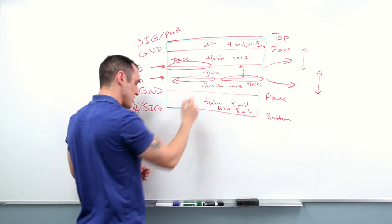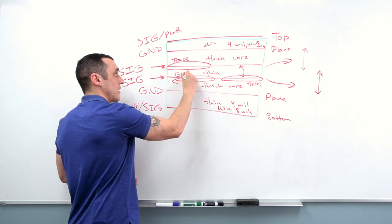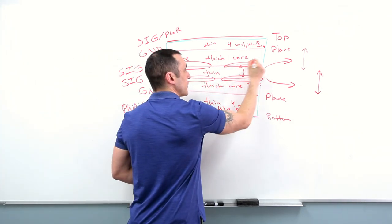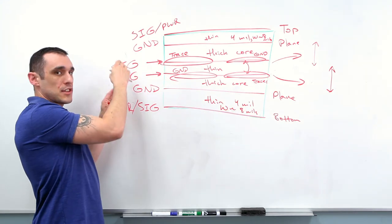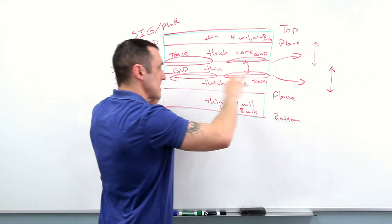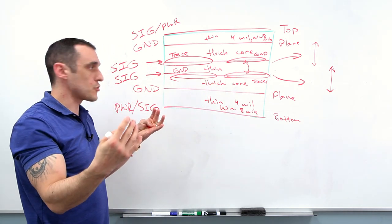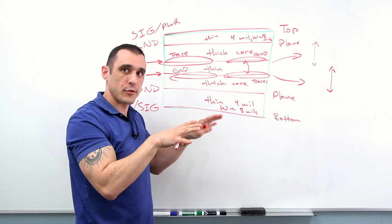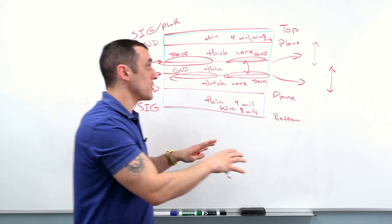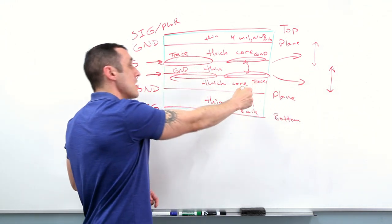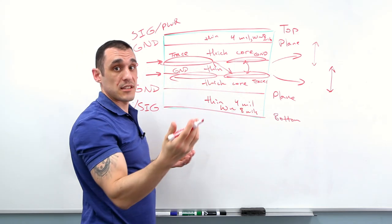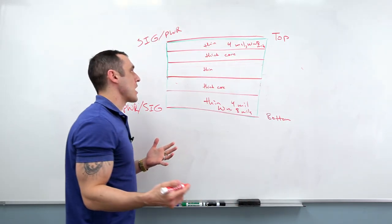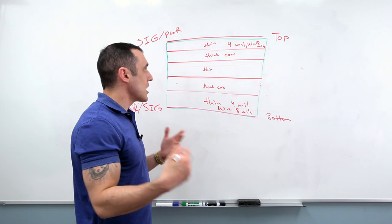You can then fill in the leftover space with ground. Same thing over here, you could fill in this leftover space with ground or power if you needed it. If you do put signals on the internal layers, just be careful to separate them because the way that modern ICs are structured, it kind of forces you to route in different directions and could end up putting you in a situation where you do get strong crosstalk between traces on these layers. And you would obviously like to avoid that.